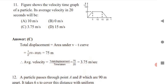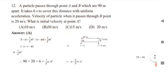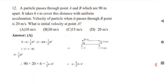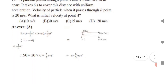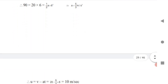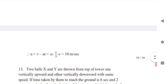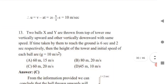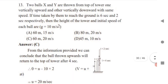Next: a particle passes from A to B, which are 90 meters apart, covering the distance in 6 seconds with uniform acceleration. The velocity of the particle at B is 20 m/s. Find the initial velocity at A. Use s = ut + ½at²; first find acceleration by substituting known values, then substitute into v = u + at to get the initial velocity.